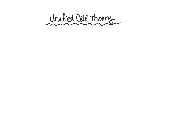These cells — these little structures that make up living things — were actually first discovered in the 1600s. But it wasn't until the 1800s that scientists really put together what is called the unified cell theory.